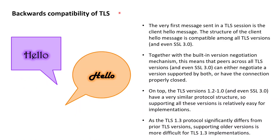As we now know, after the last few lessons, the TLS handshake starts off with hello messages exchanged between the client and the server. The very first message sent in a TLS handshake is the client hello message sent by the client to the server. The structure of this client hello message was kept compatible among all the TLS versions all the way back down into SSL 3.0.